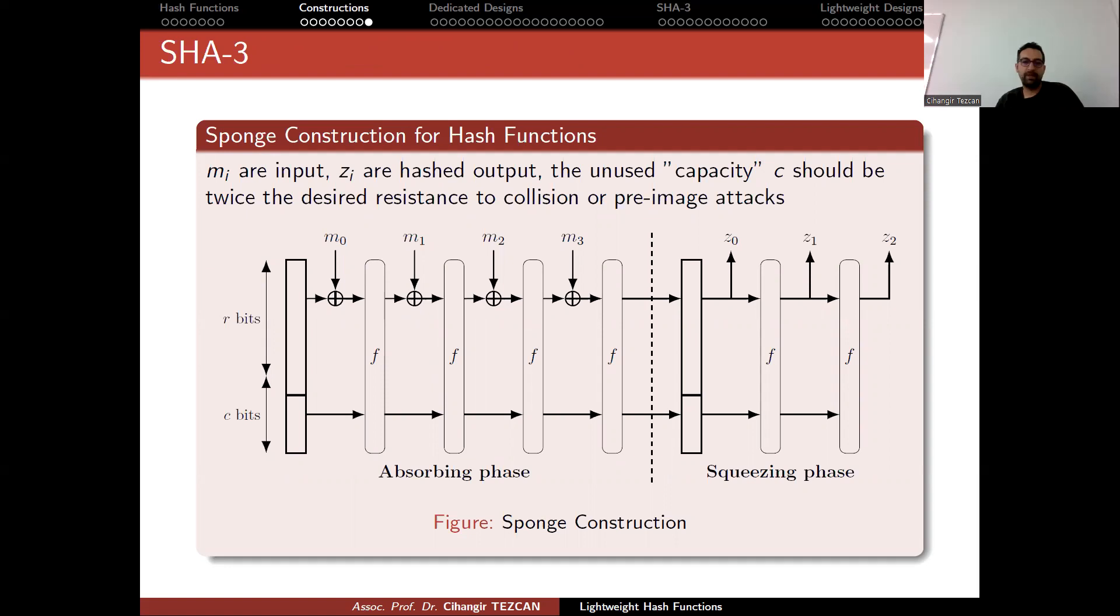This picture actually summarizes the whole procedure and tells you how to obtain a hash function from a sponge function. So in this picture, m_i are inputs. So you have a message which is divided into blocks of m_0, m_1 and so on. So in this picture, you have four blocks.